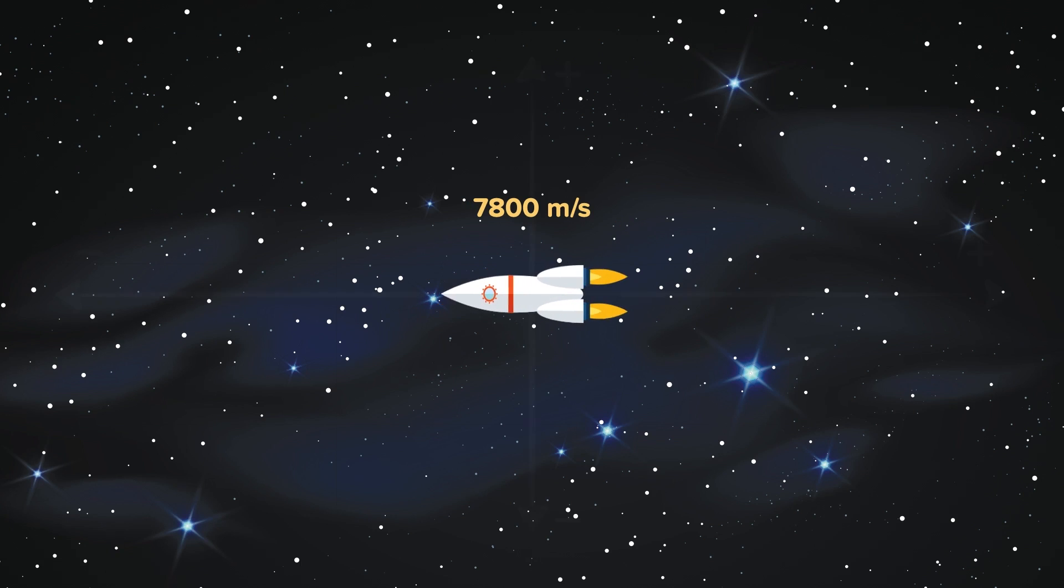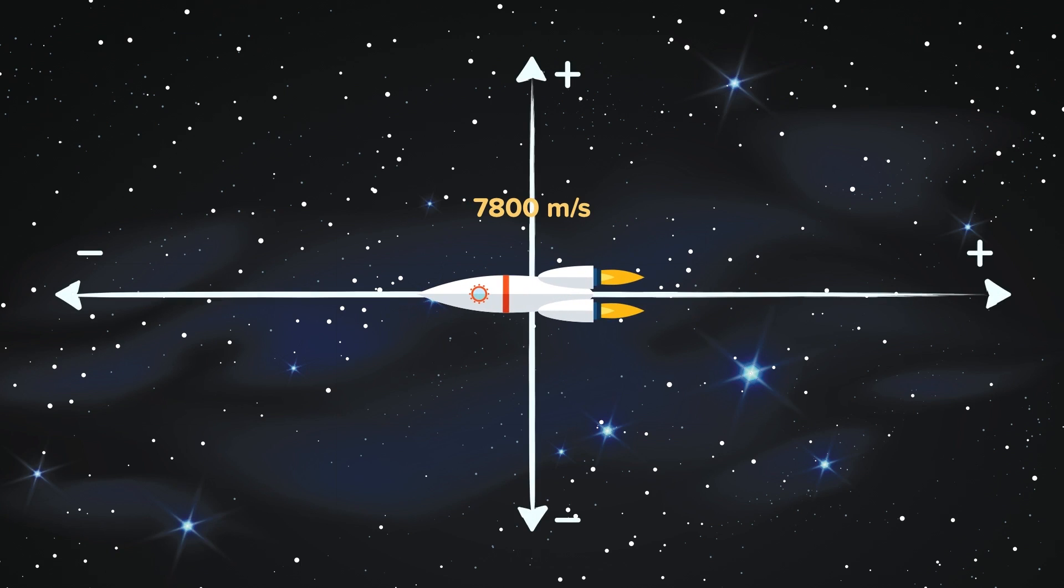The rocket is now moving to the left, and so it has a velocity of minus 7,800 metres per second.